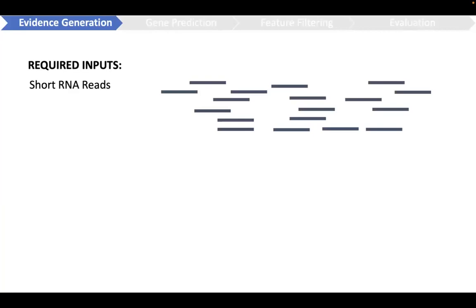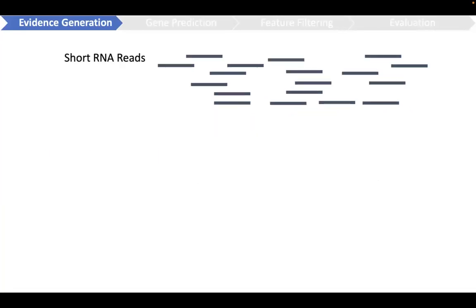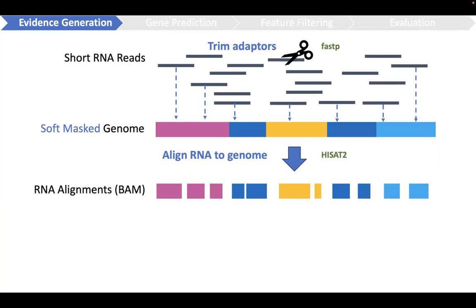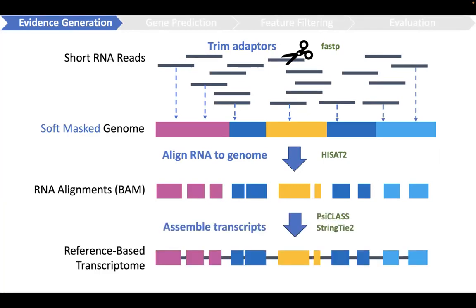Only two inputs are required: short RNA reads and a soft-masked genome. From there, EASL will trim the provided RNA reads and align them to the genome, then assemble the alignments into transcripts, utilizing a dual approach with Psi-Class and StringTie2.